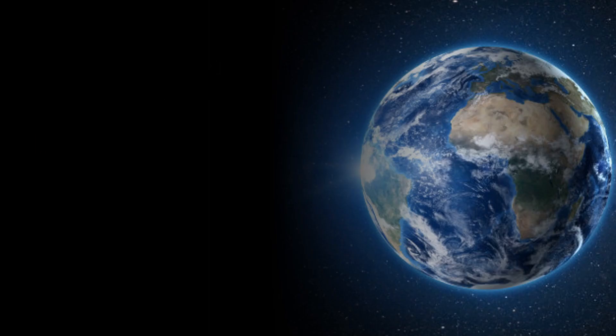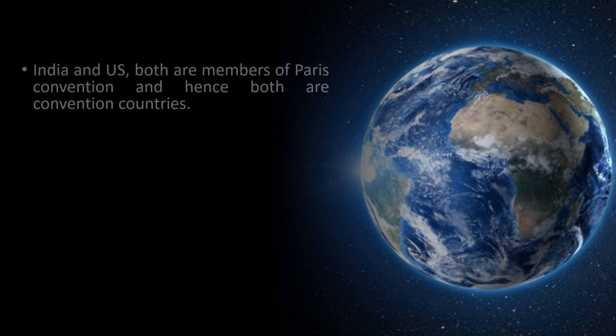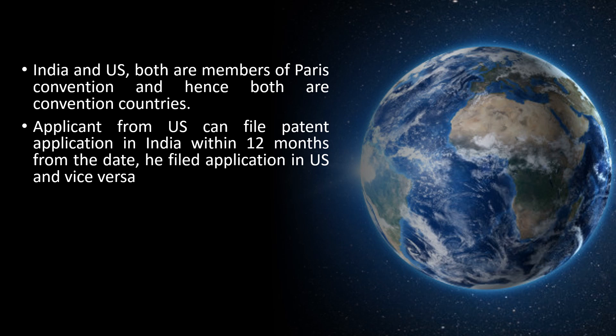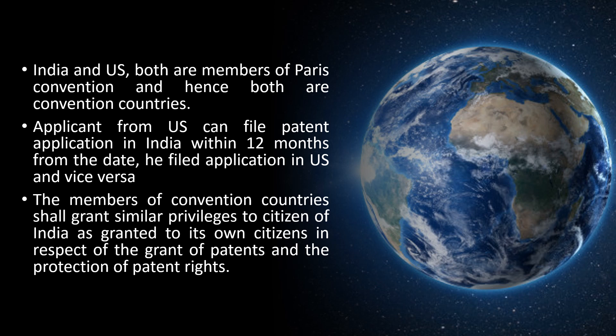Let's understand this with the help of an example. For example, India and the US are both members of the Paris Convention and hence both are convention countries. An applicant from the US can file a patent application in India within 12 months from the date they filed a patent application in the US, and vice versa. The members of convention countries shall grant similar privileges to citizens of India as granted to their own citizens in respect of the grant of patents and protection of patent rights.